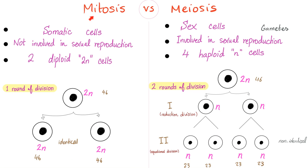Mitosis versus meiosis. Mitosis happens in somatic cells; meiosis in sex cells or gametes. Mitosis is not involved in sexual reproduction, while meiosis is involved in sexual reproduction and gives you genetic diversity thanks to crossing over. Mitosis will give you two diploid cells, however meiosis will give you four haploid cells. Haploid means half. Mitosis has one round of division.